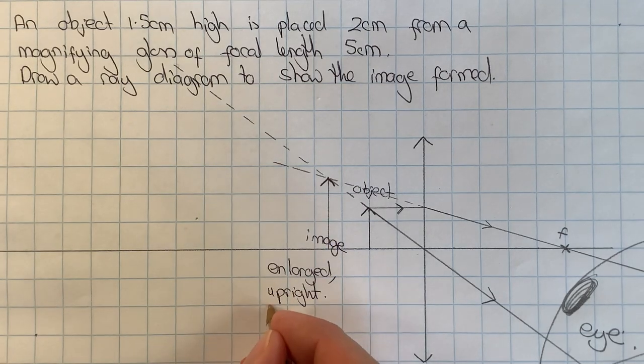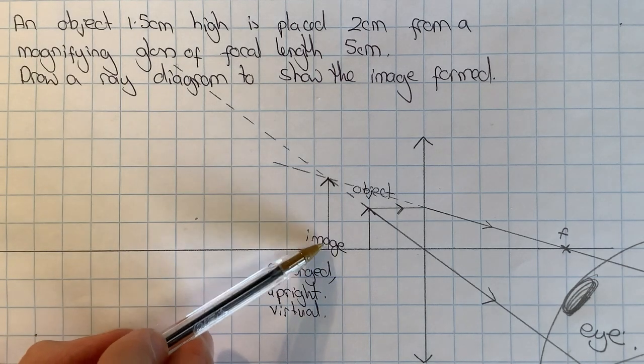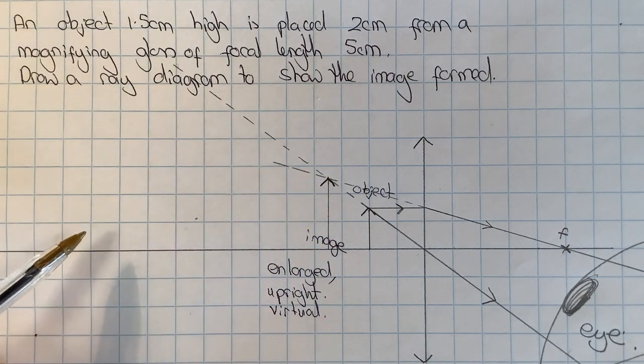If I wanted to calculate the magnification, I could measure the height of the image and divide it by the height of the object, like I did in the earlier video.